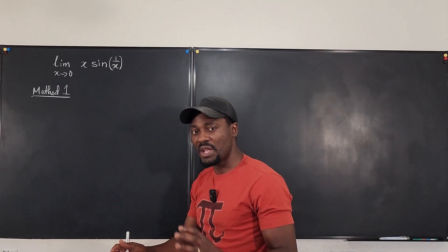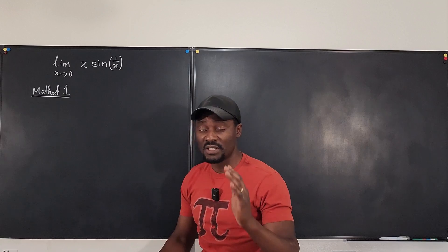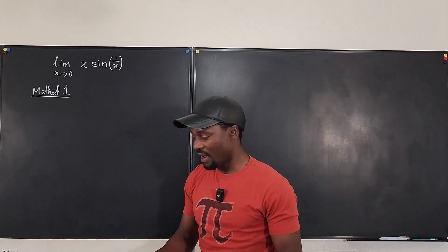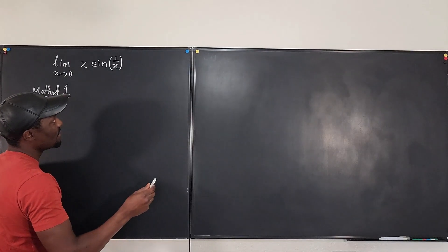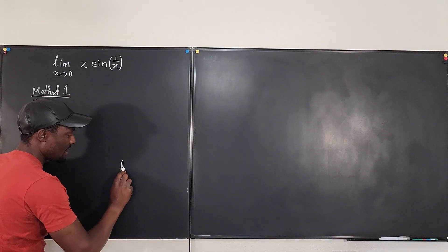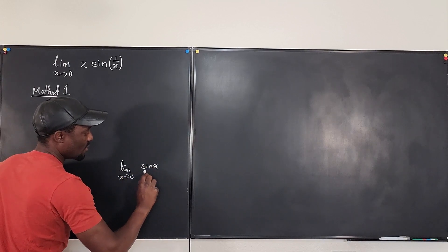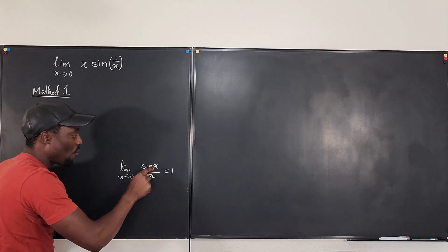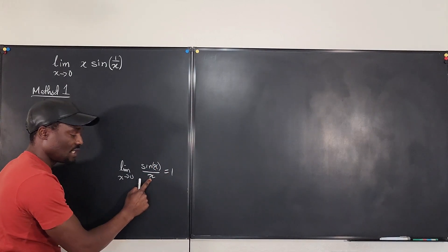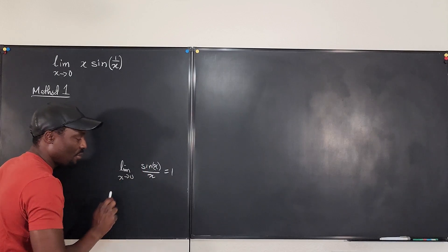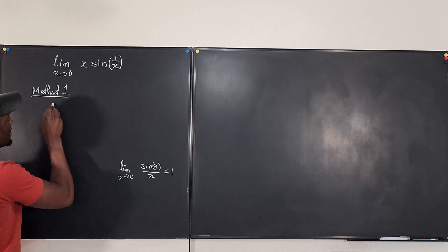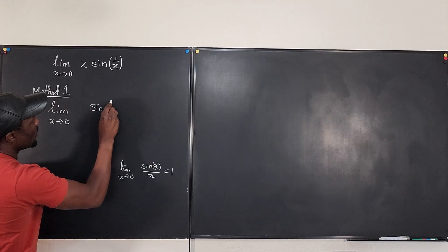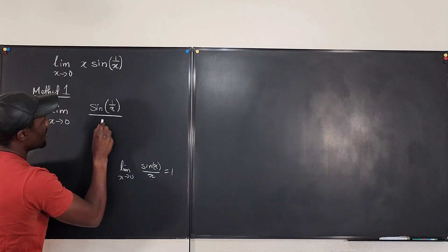So we're going to try some algebraic manipulation. It's always difficult to combine a polynomial and the sine function and try to get a limit. Remember, I've used in many of my videos that the limit as x goes to zero of sine x over x equals one. So what we can do is try to rewrite this expression so that the argument of the sine is also the denominator. I'm going to write this as the limit as x goes to zero of sine of 1 over x, divided by 1 over x.